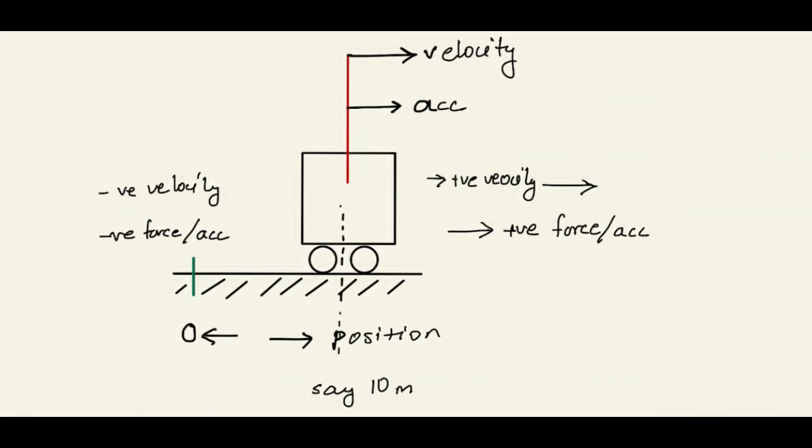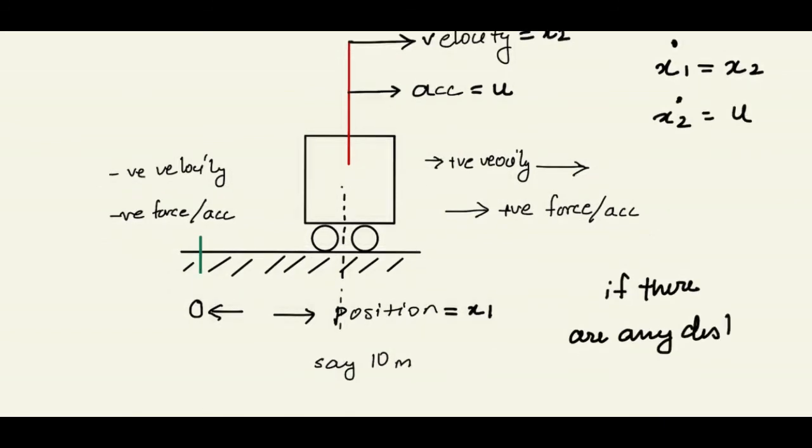To summarize, this system can be defined as x1 dot equal to x2, x2 dot equal to u if u is the only external input in the form of force or acceleration, otherwise x2 dot equal to u plus f if there is a disturbance in the form of acceleration.